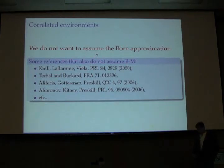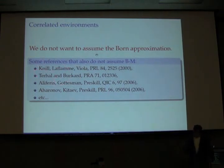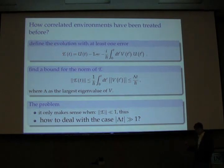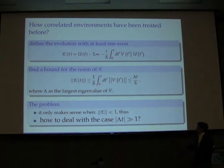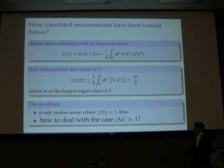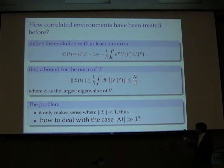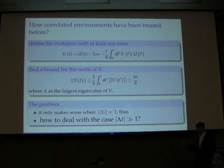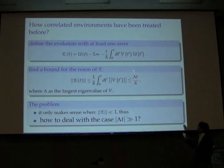We don't want to use the Born approximation, and this has been done before in a series of papers. What you do is define the evolution with one error: you take the evolution operator, take the identity out, and find a bound to the norm. This is related to the probability of having one error in the evolution of the computer, where you take the average over the largest eigenvalue of the interacting Hamiltonian. The problem we want to focus on is how to deal with the case where your interacting Hamiltonian is unbounded — where this largest eigenvalue is very large or when you're looking at very long times.